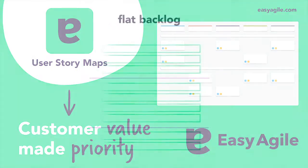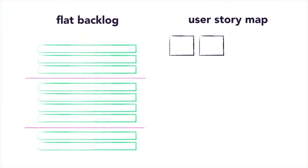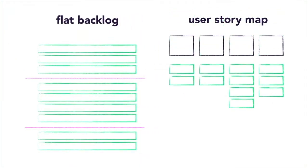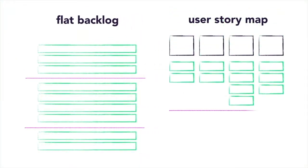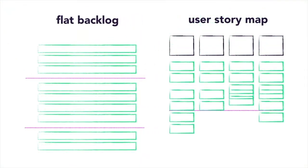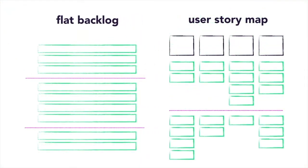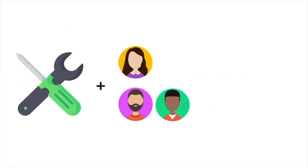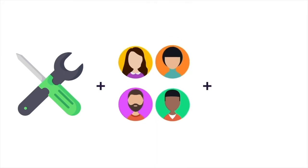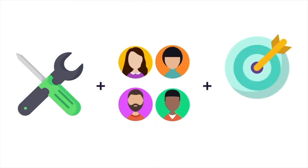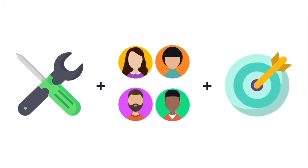A user story map transforms a flat product backlog into a meaningful visualisation of the journey a customer takes with a product. User story maps help teams to identify: why are we building this? Who are we building this for? And what value will it provide them?